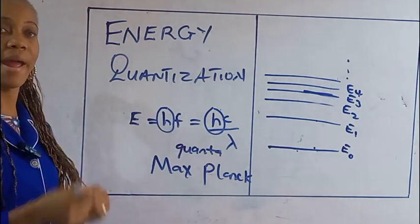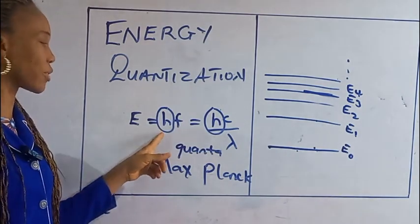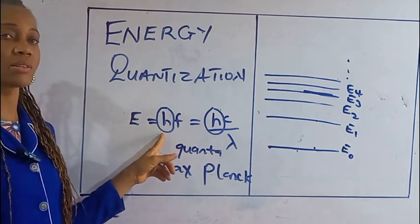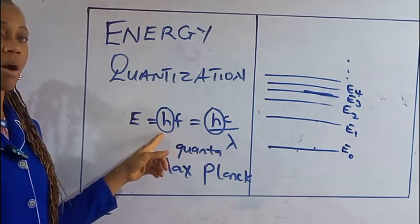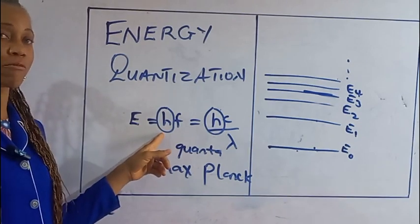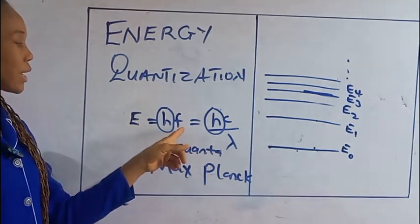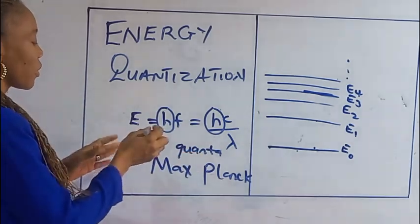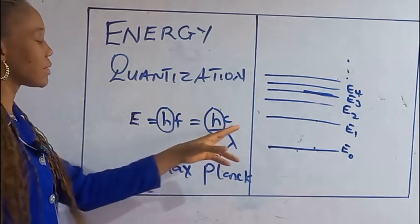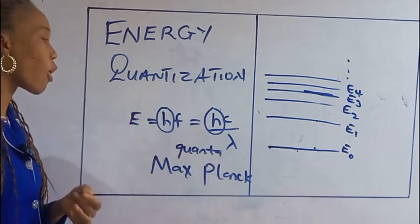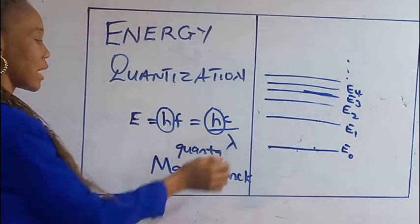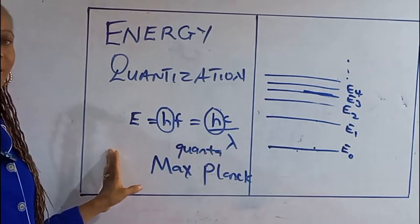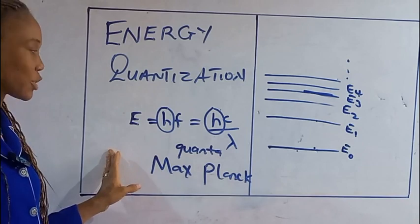Where H is Planck's constant, equal to 6.63 times 10 raised to the power of minus 34 joule seconds. F is the frequency, C is the speed of light, and lambda is the wavelength. We are going to apply this in solving different calculations.